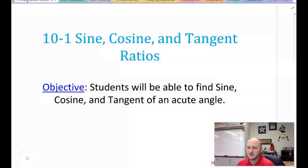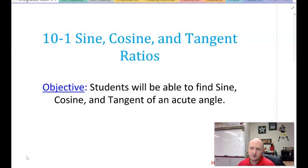Our objective is that students will be able to find sine, cosine, and tangent of an acute angle. Remember, acute just means less than 90 degrees.